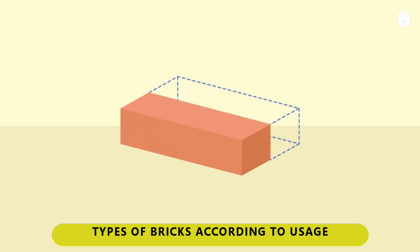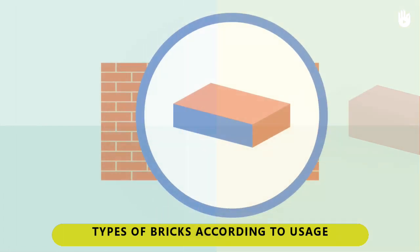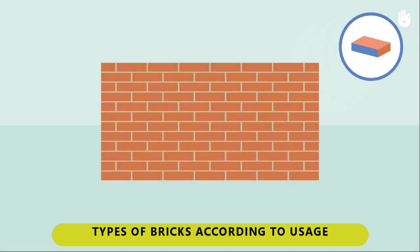7. Soap — a stretcher brick horizontally divided into half at the sides. 8. Bat — a soap brick vertically divided into half at the sides or edge.